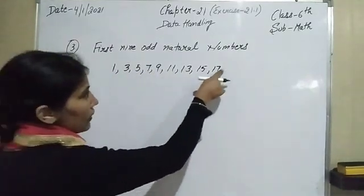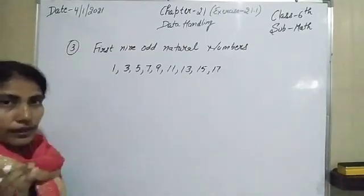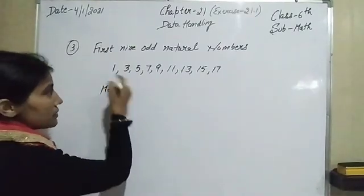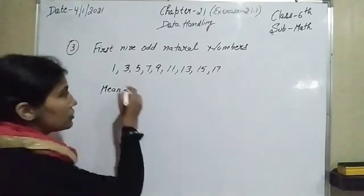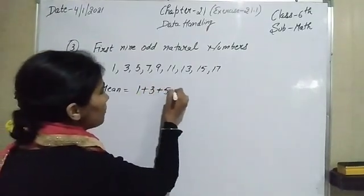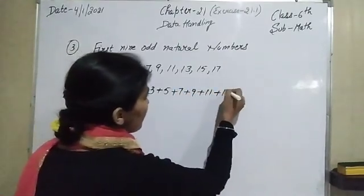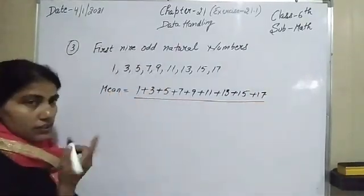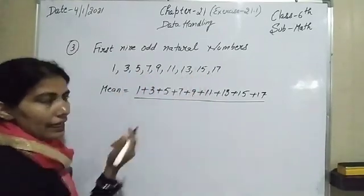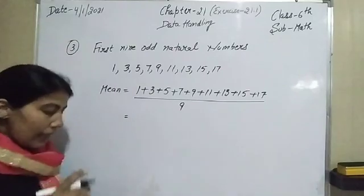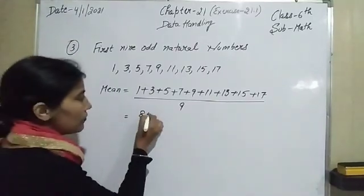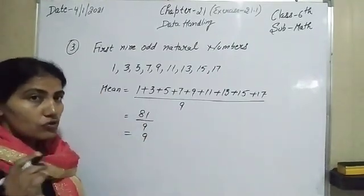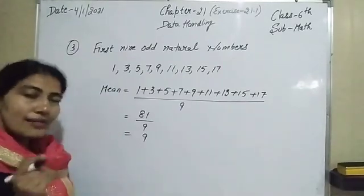Counting these: 1, 2, 3, 4, 5, 6, 7, 8, 9 — yes, these are the first nine odd natural numbers. Using the same formula — sum of observations divided by number of observations: 1 plus 3 plus 5 plus 7 plus 9 plus 11 plus 13 plus 15 plus 17, divided by 9. When you add these you get 81, divided by 9 — 9 nines are 81 — so the mean of the first nine odd natural numbers is 9.